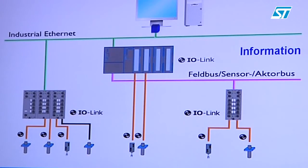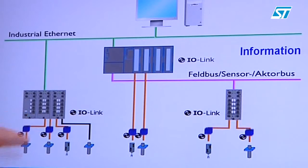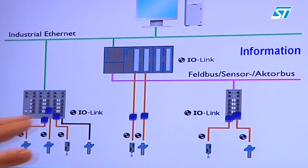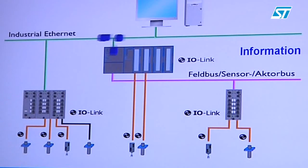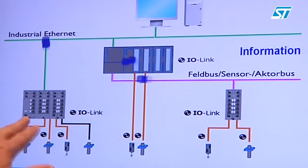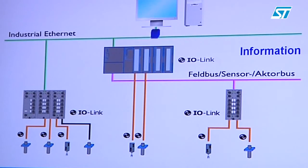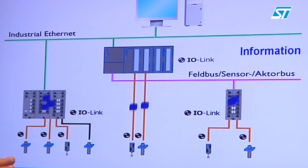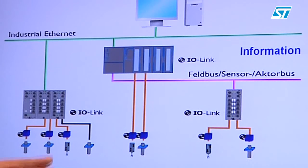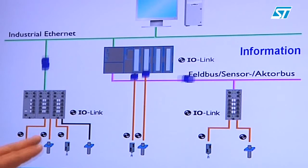We are showing you here the traditional system. We have had the intelligence down to the digital input and digital output modules. Here we show IP65 based modules. Thanks to the IO-Link communication system, the intelligence moves down to the sensor and to the actor systems. It allows the end user to program the sensor and to feedback probably short circuit information from the actoric side.